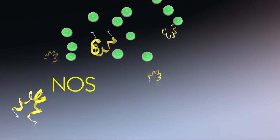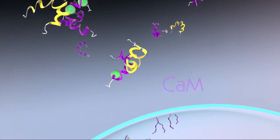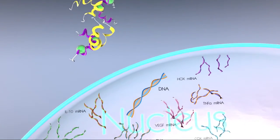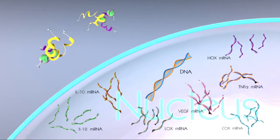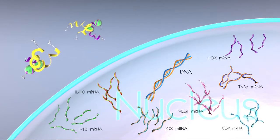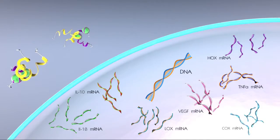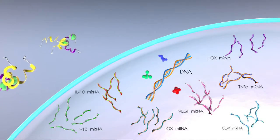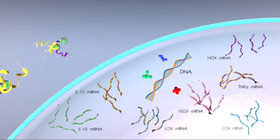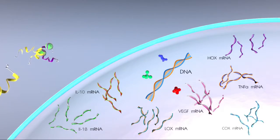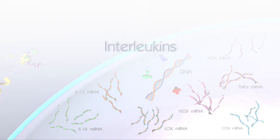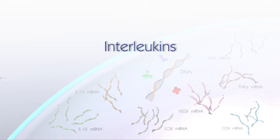Examples of second messengers affected include nitric oxide synthase and calmodulin, and potentially several others. These second messengers translate environmental stimuli from the cell membrane to the nucleus, stimulating the creation of transcription factors. These transcription factors regulate a number of genes that either inhibit or increase the production of certain important proteins. One such group of proteins is interleukins, which are cytokines that mediate communication between cells, stimulate immune responses, and regulate many of the processes during inflammation.